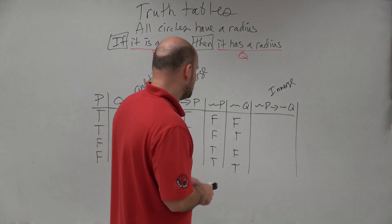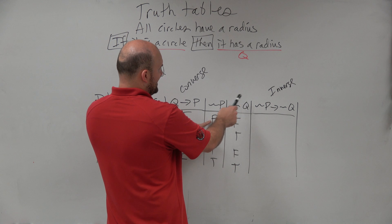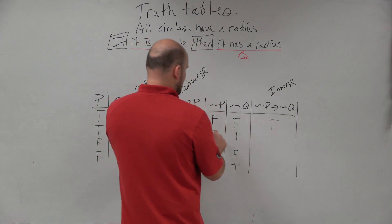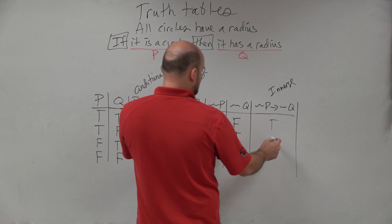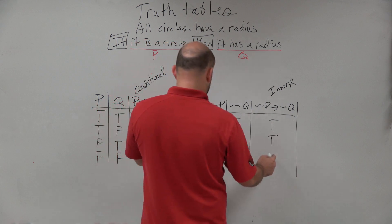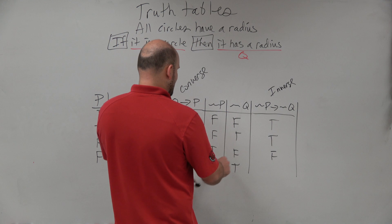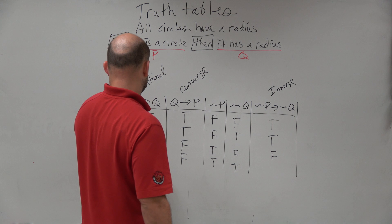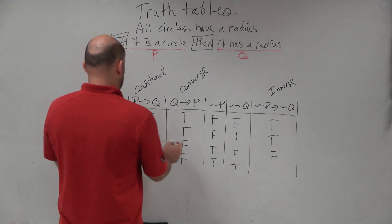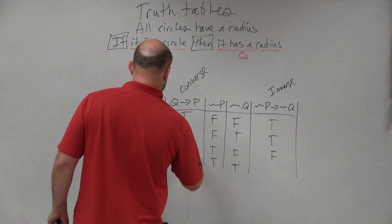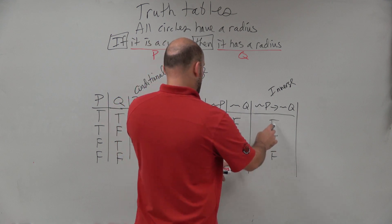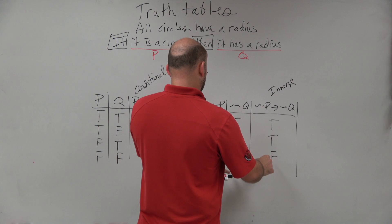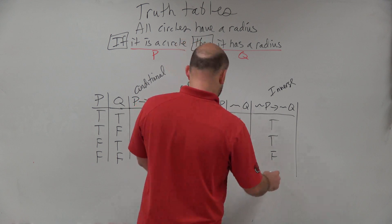Looking at the inverse — if not p, then not q: false-false is true, false-true is still a true statement, true-false is a false statement, and true-true is true. The easiest thing to remember is: if your hypothesis is true and your conclusion is false, your statement is always false.